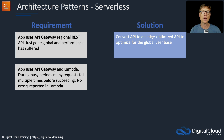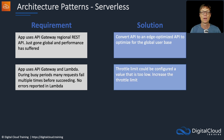An app uses API Gateway and Lambda. During busy periods, many requests fail multiple times before they eventually succeed, but no errors are reported in Lambda. This could be that the throttle limit has been configured too low on the API — so rather than the Lambda function doing the throttling, it could be API Gateway that is throttling.